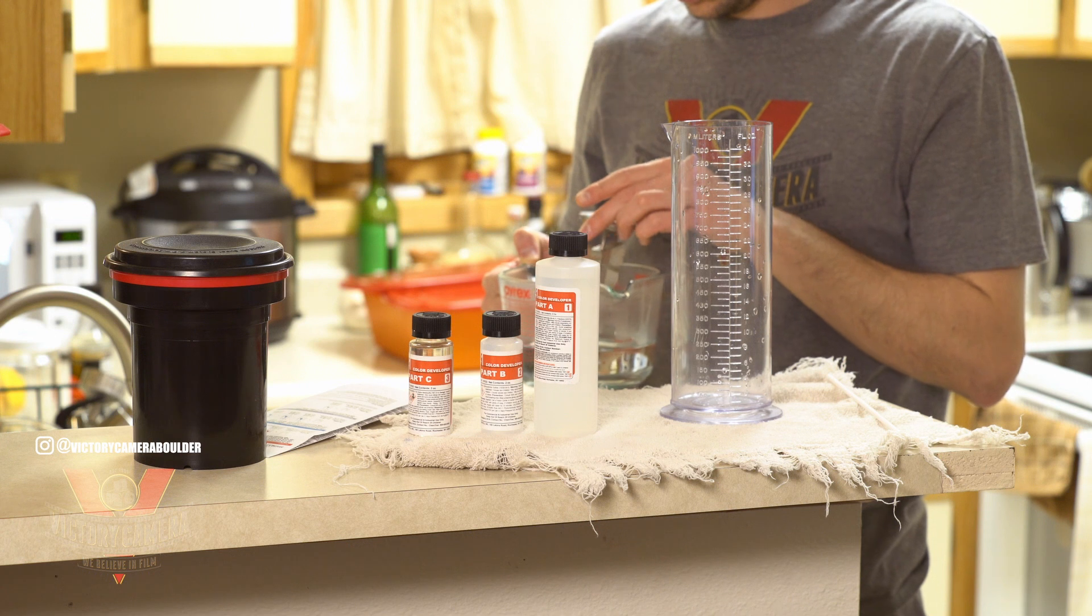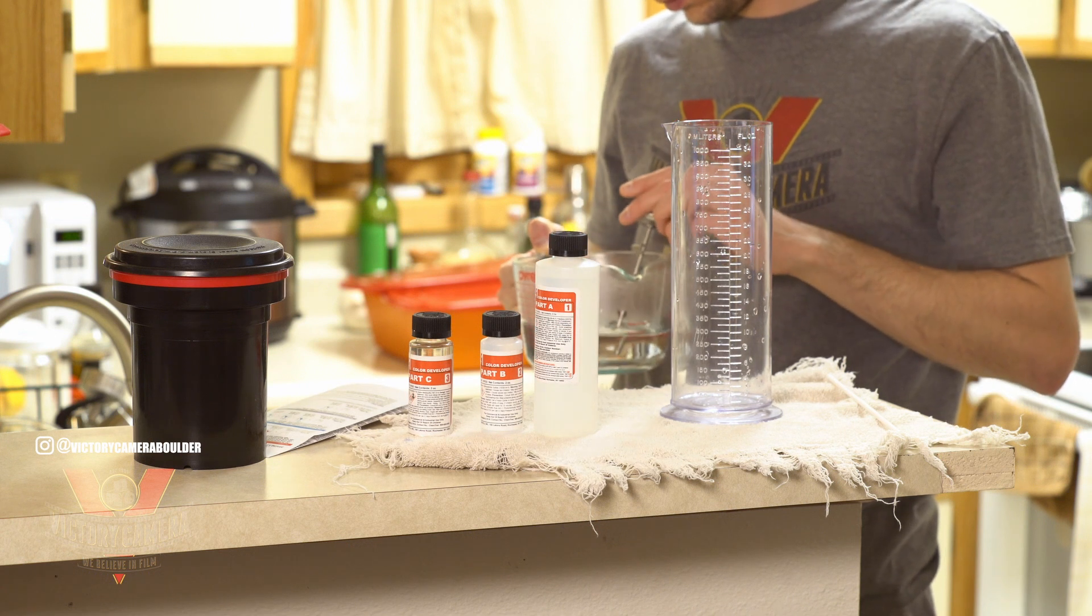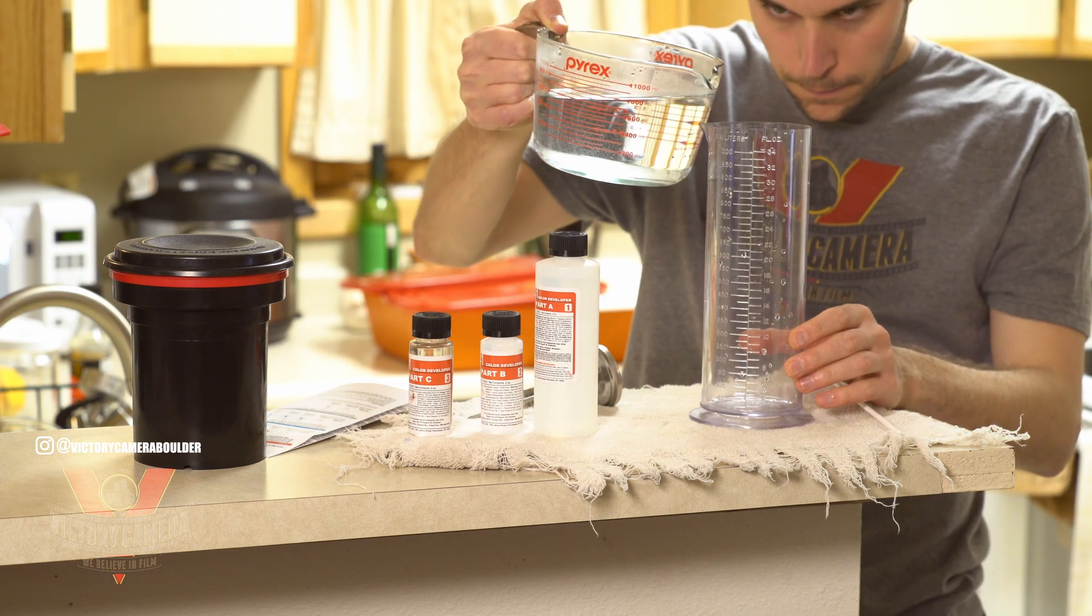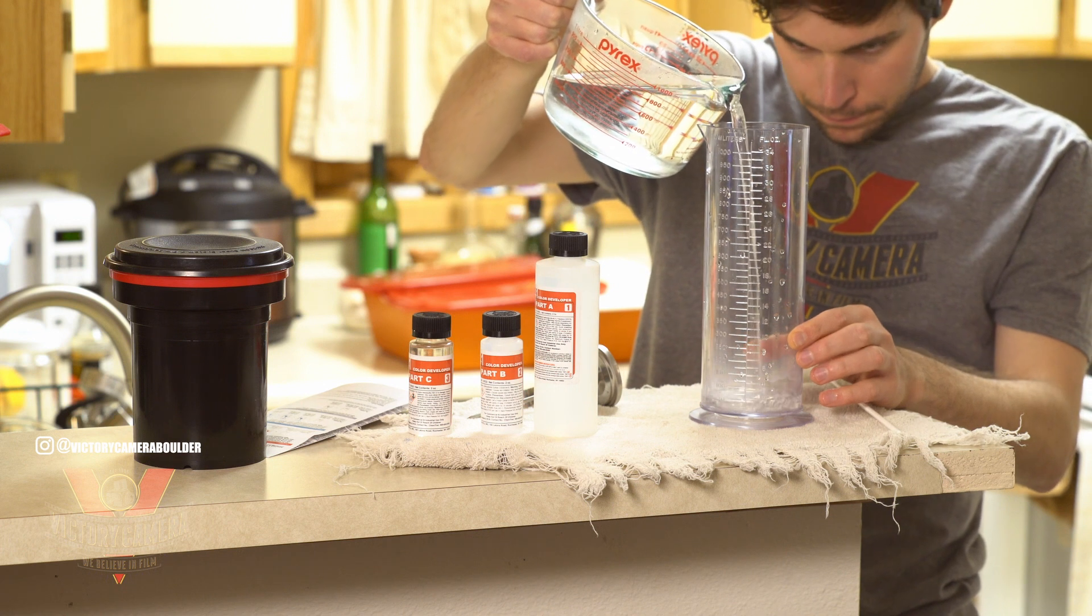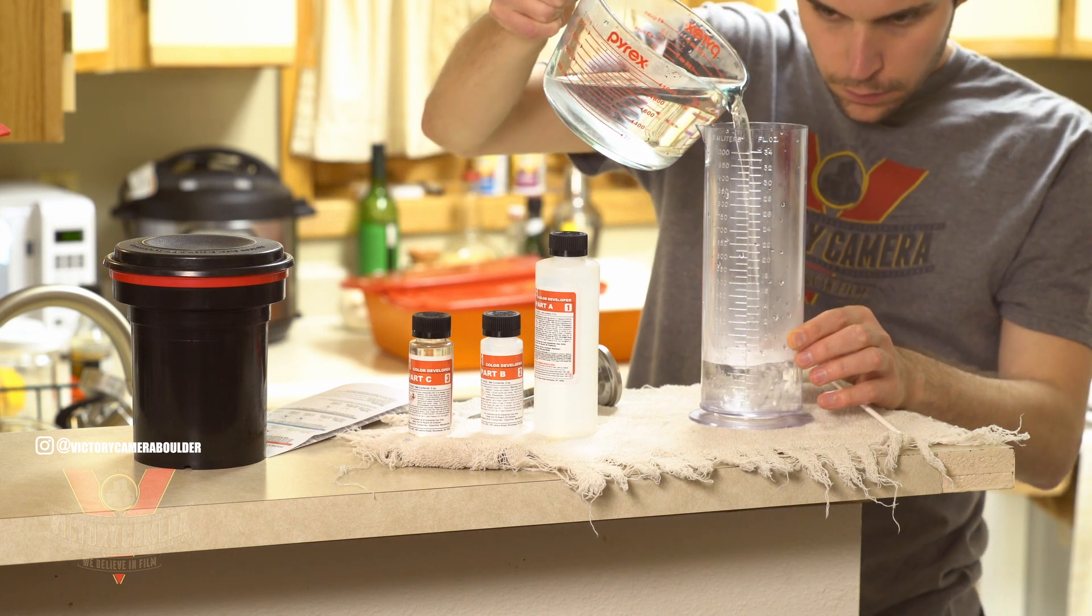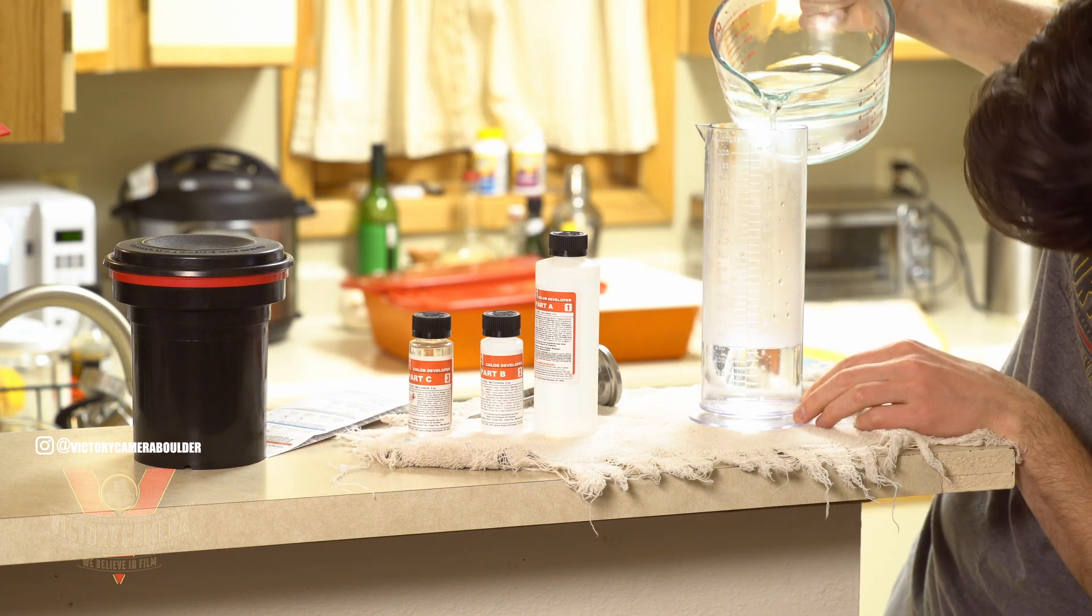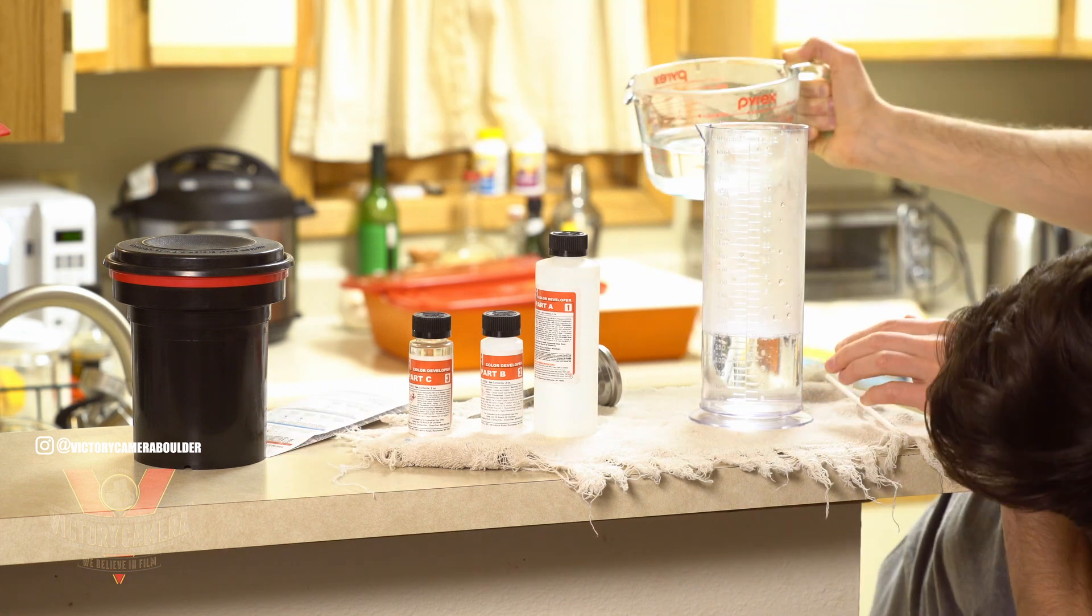We need a graduated cylinder and the three parts of the solution. I'm making a pint of this, so per the instructions, I'll start with 10 ounces of 120 degree water. You can mix boiled water with warm until you get the right temperature, or even microwave it in a safe vessel.